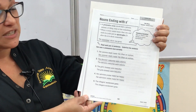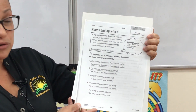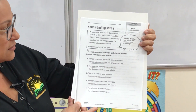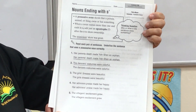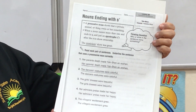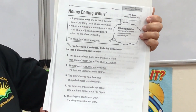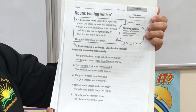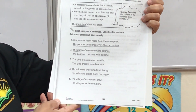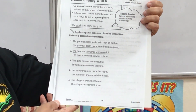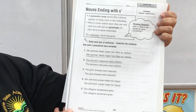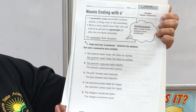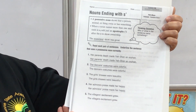Now for plural possessive nouns — that means more than one. The apostrophe goes after the S. It's the same concept showing ownership, but it's more than one. For example, number one: 'Her parents' death made Yeshen an orphan.'